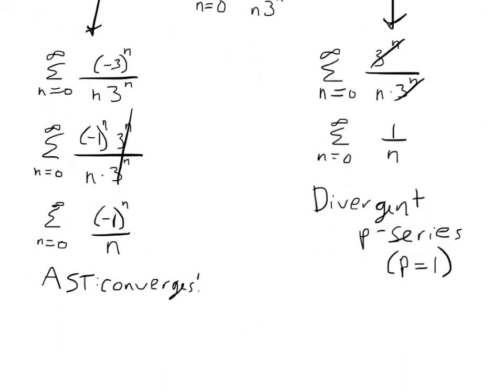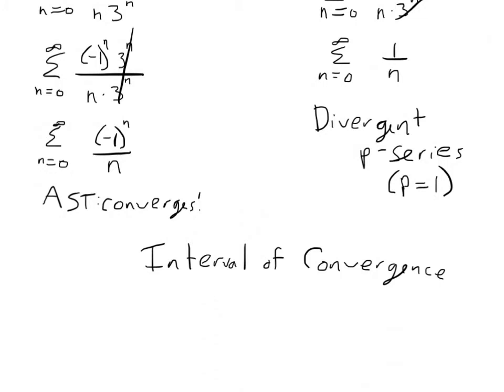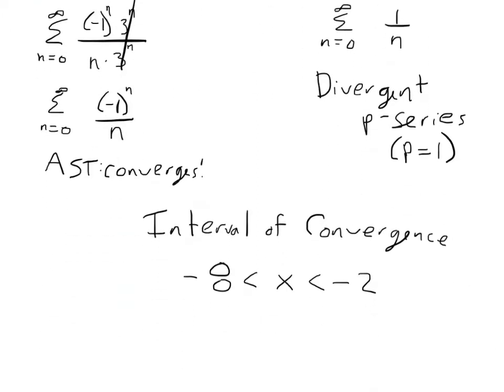So what does that mean about our interval of convergence? We knew before that our interval of convergence was between negative 8 and negative 2. We found that it converges when you plug in negative 8, so I'm going to change this less than symbol to less than or equal to. And it diverges when it's negative 2, so I'm going to leave this one here. If I wanted to write this in interval notation, I would write it like this. The bracket means that you include negative 8. That's a closed interval. The parentheses is an open interval meaning you don't include negative 2.